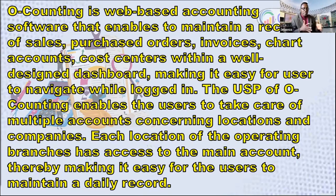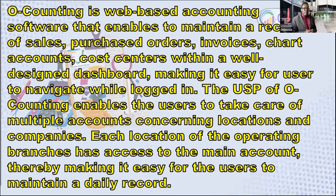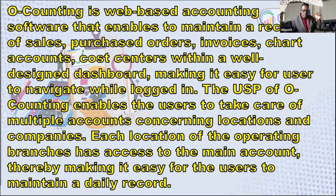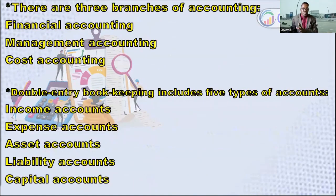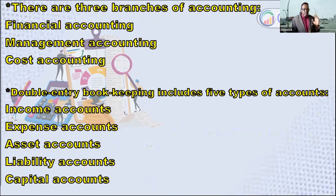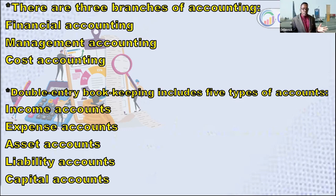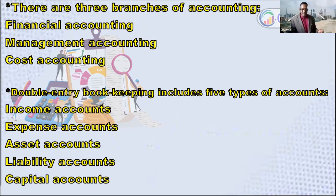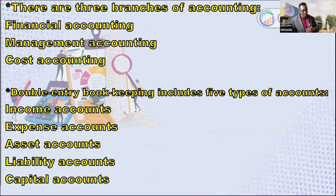Of course, they will be given the level of access that is needed for them, and they work right there on the one OAccounting. There are three branches of accounting: financial accounting, management accounting, and cost accounting. Two key accounting terms are debit and credit — you are either down or up.